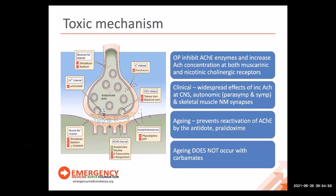There is a phenomenon called aging — irreversible loss of an alkyl side chain with permanent binding of the organophosphate, which prevents reactivation of acetylcholinesterase by the antidote pralidoxime. The time for aging to occur depends on the individual agent. Aging does not occur with carbamates. Organophosphates and carbamates are frequently formulated with hydrocarbon solvents like xylene, so inhalation of solvent fumes can produce headache and dizziness, but this does not indicate organophosphate poisoning — the insecticides themselves have very low vapor pressures and are only inhaled when aerosolized.